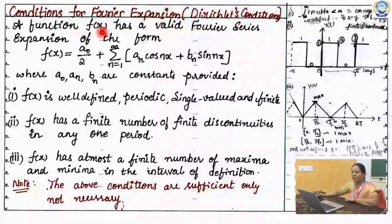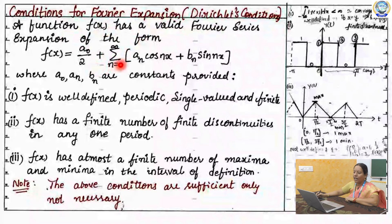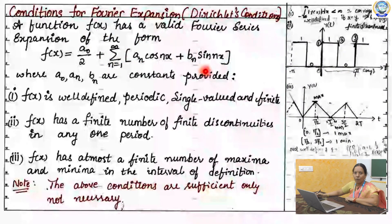A function f(x) has a valid Fourier series expansion, that is f(x) = a₀/2 + Σ(n=1 to ∞) [aₙ cos(nx) + bₙ sin(nx)], where a₀, aₙ, bₙ are the Fourier coefficients. These will be valid if the function satisfies the following three conditions.